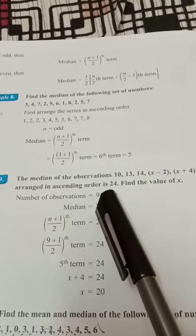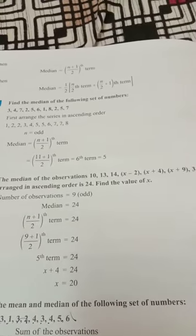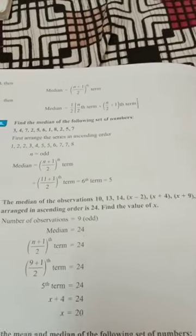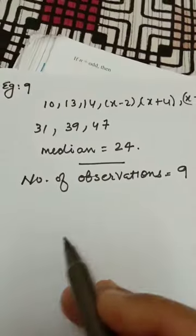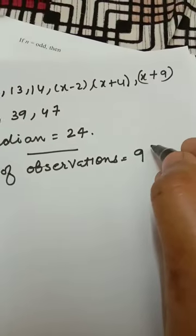These observations are arranged in ascending order and the median given is 24. Find the value of x. The median is 24, number of observations is 9, 9, that means odd.